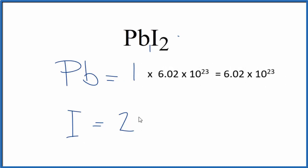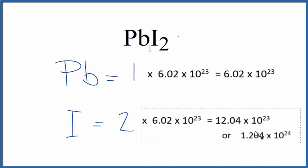For iodine, you would multiply the number of iodine atoms, 2 iodine atoms, multiply that by 2, and that would give you the number of iodine atoms in 1 mole of PbI2.